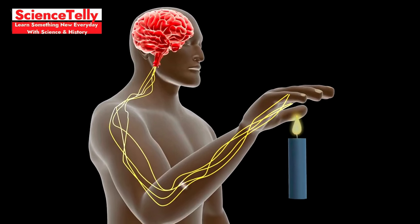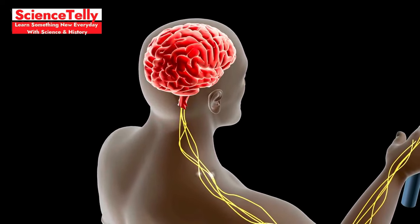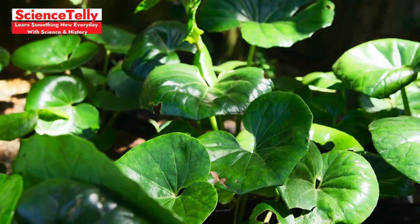Pain, as humans feel it, is a response from our brain, triggered by nerves that tell us something is wrong, like when we touch something hot or get a cut. Plants lack this setup.